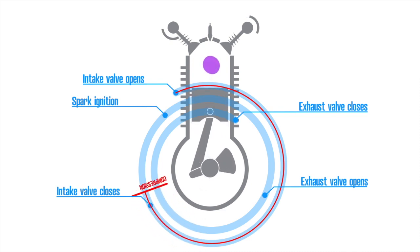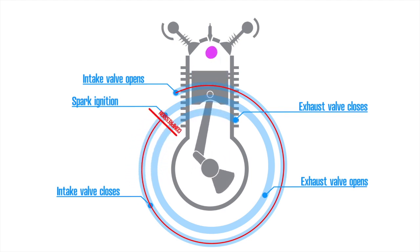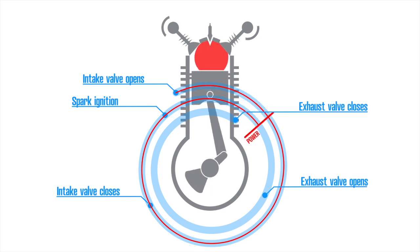Again this allows maximum time for the intake of the fuel air mixture to occur. The spark fires just before the power cycle begins to allow the fuel air mixture time to fully burn through in preparation for the rapid expansion in the power cycle.